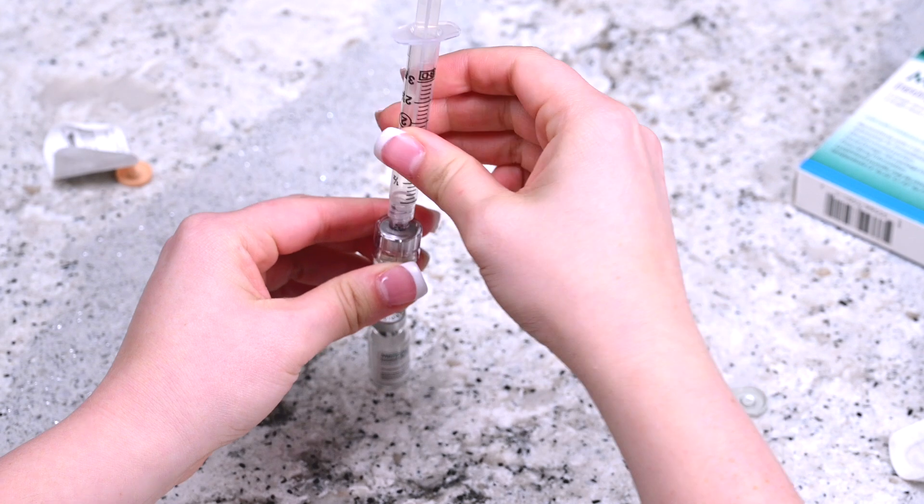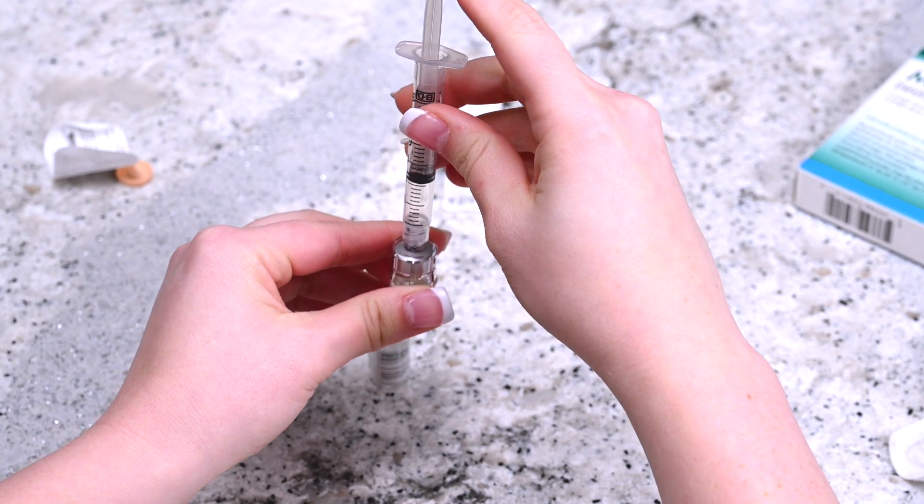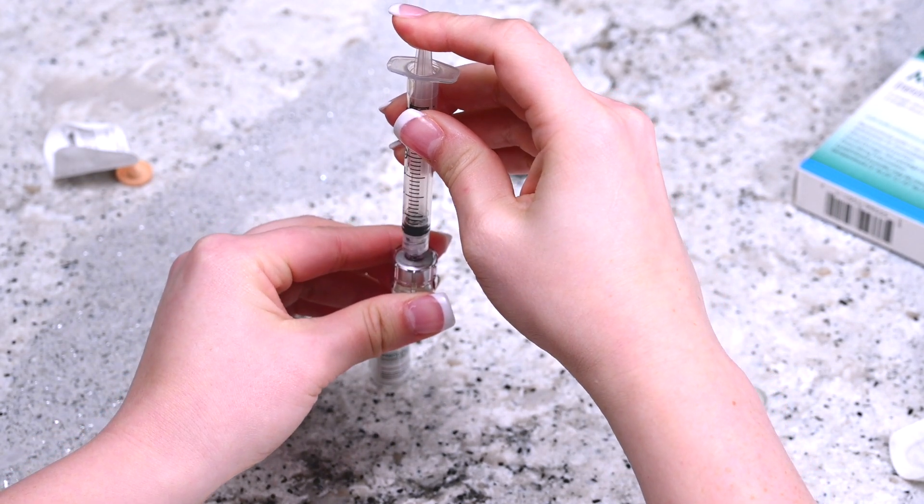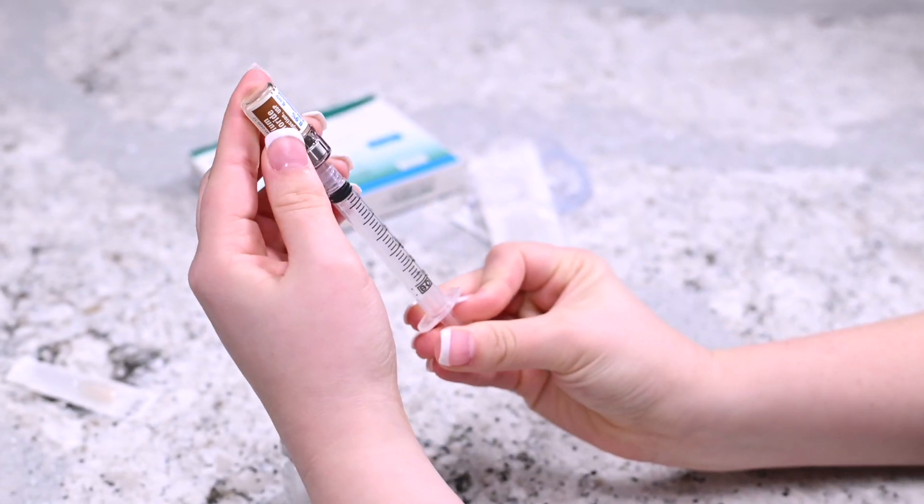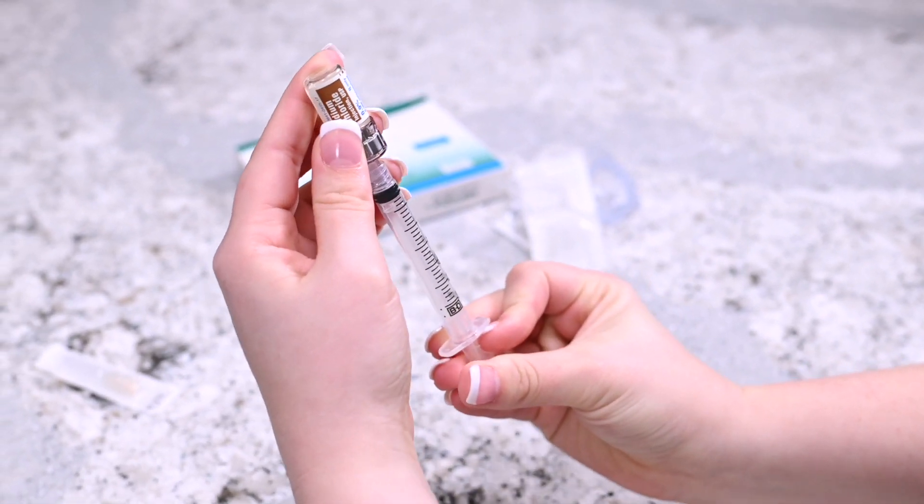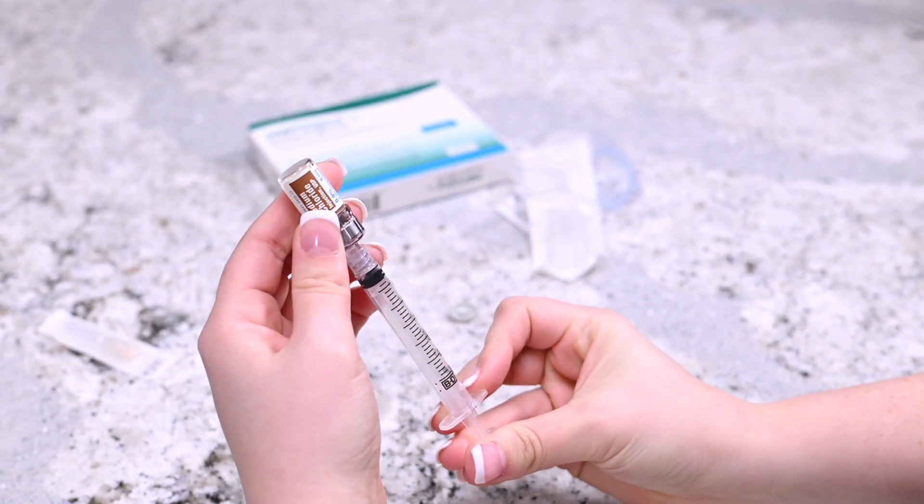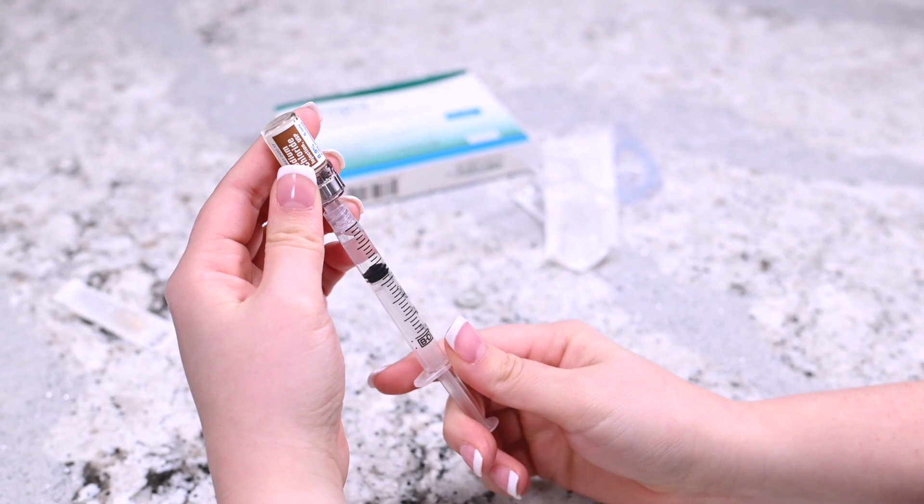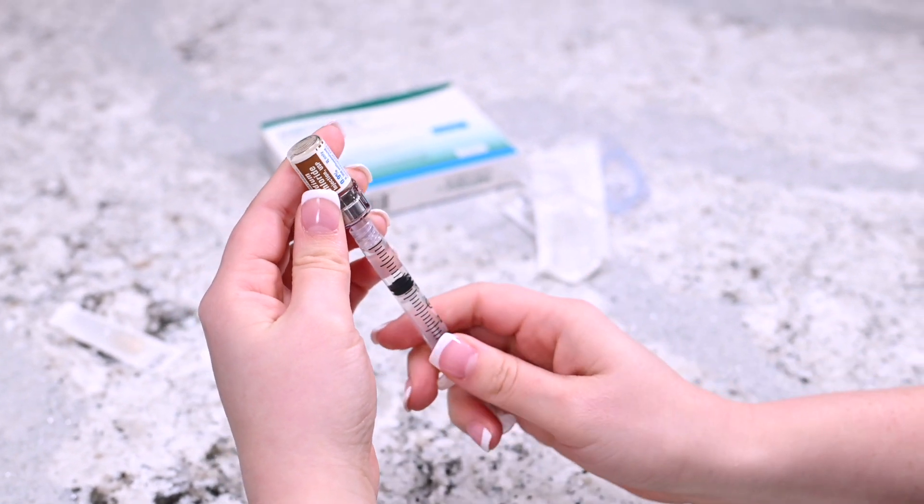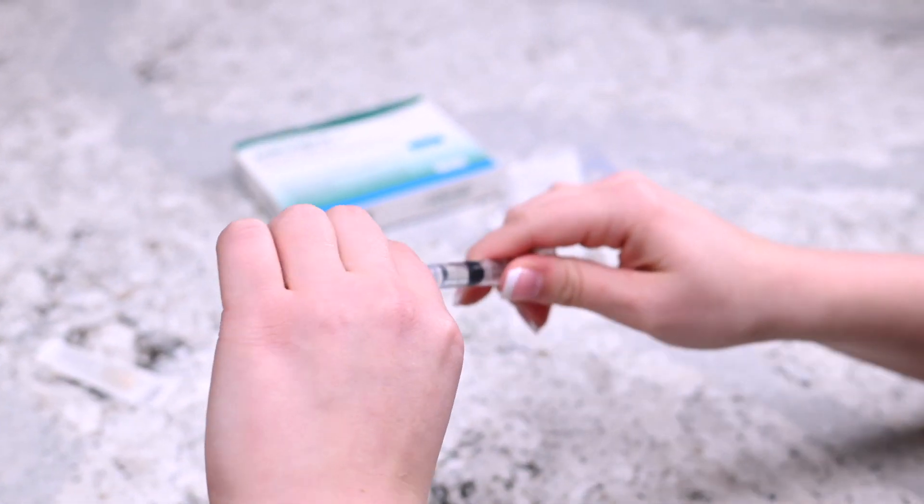Gently apply pressure onto the plunger so that the air transfers from the syringe into the diluent vial. Invert the syringe so that the vial is upside down but still attached to the syringe. Pull the plunger back slightly past the one ml mark. Remove the syringe with the attached q-cap from the vial and set the vial aside.